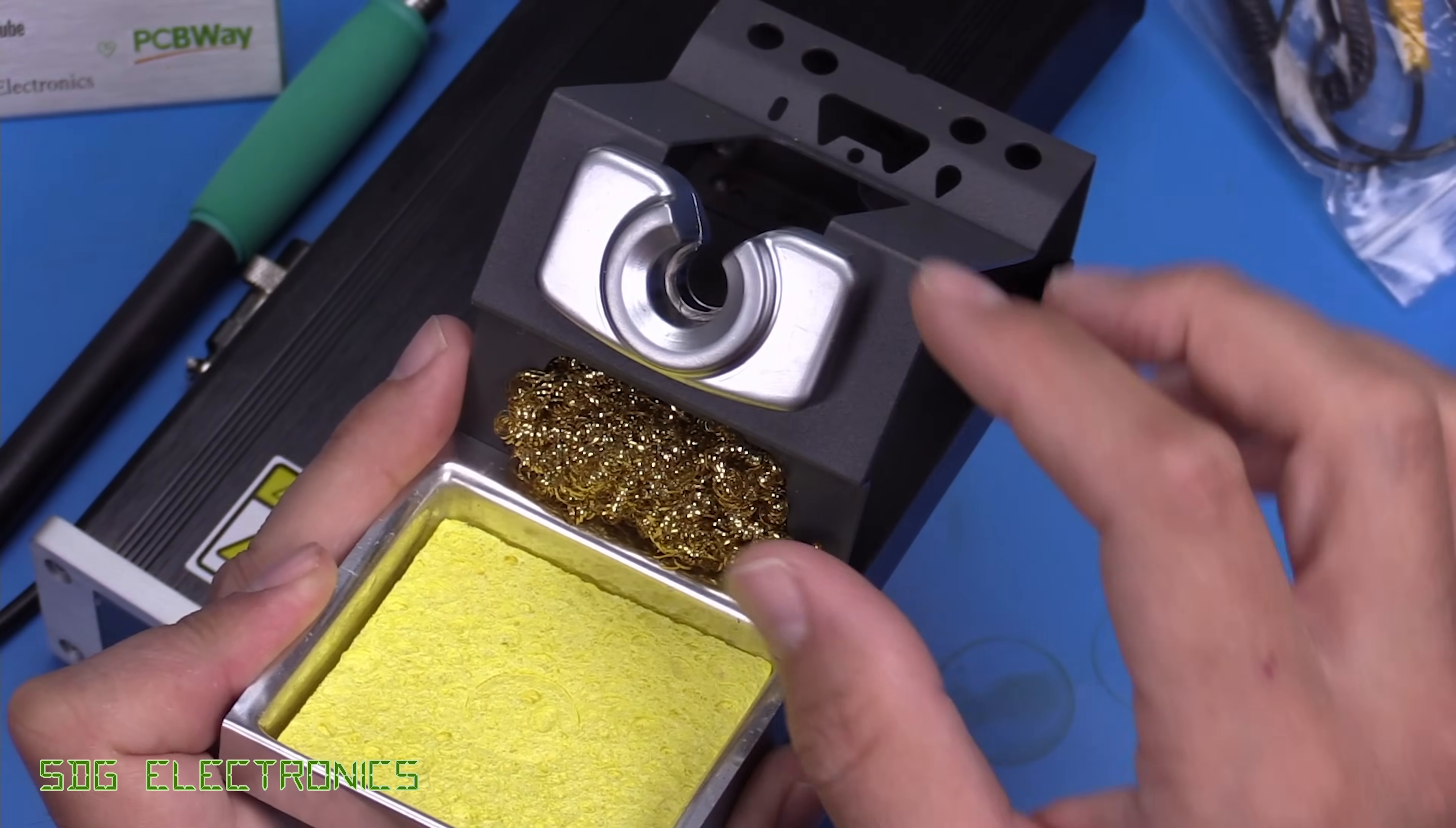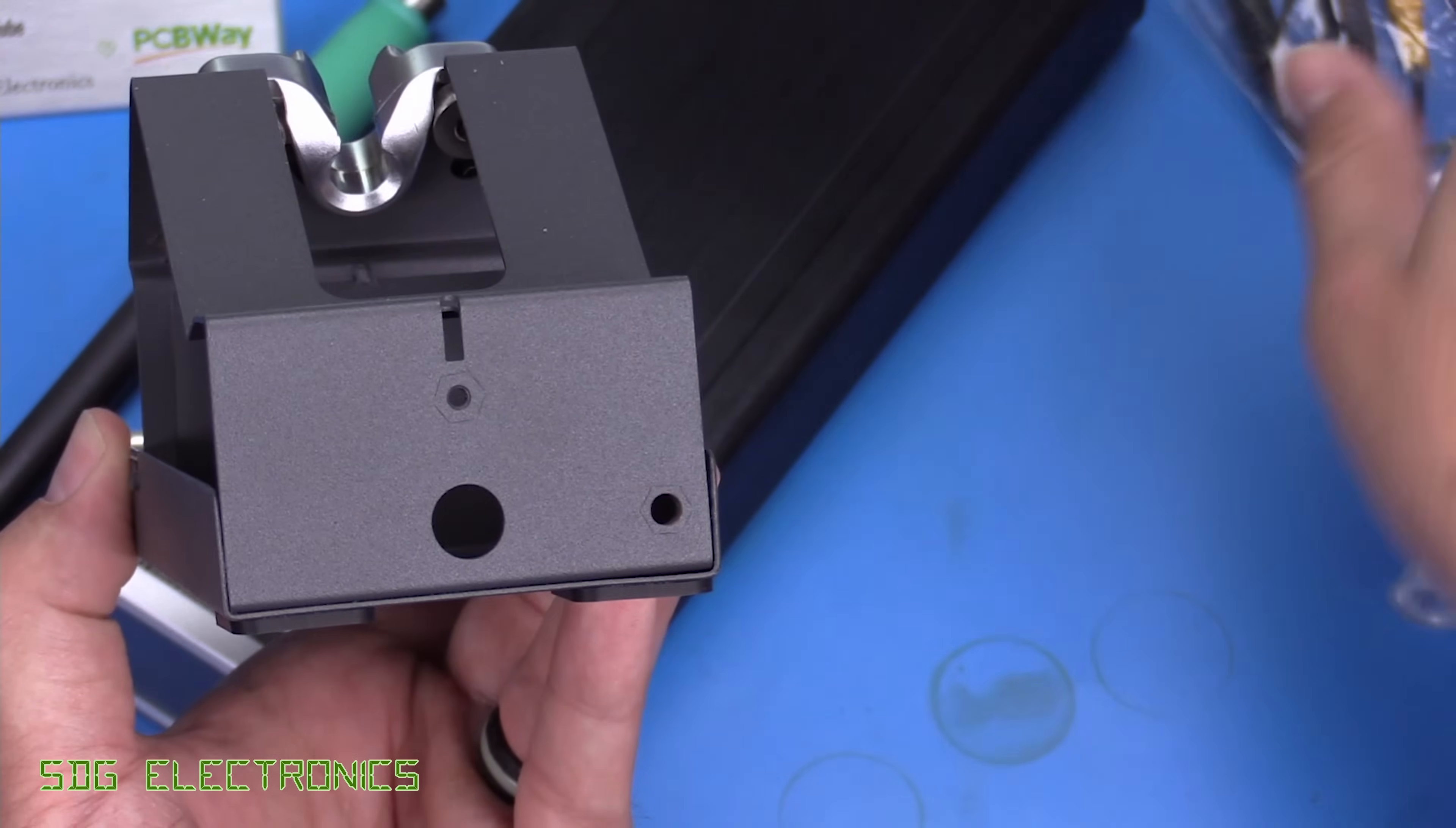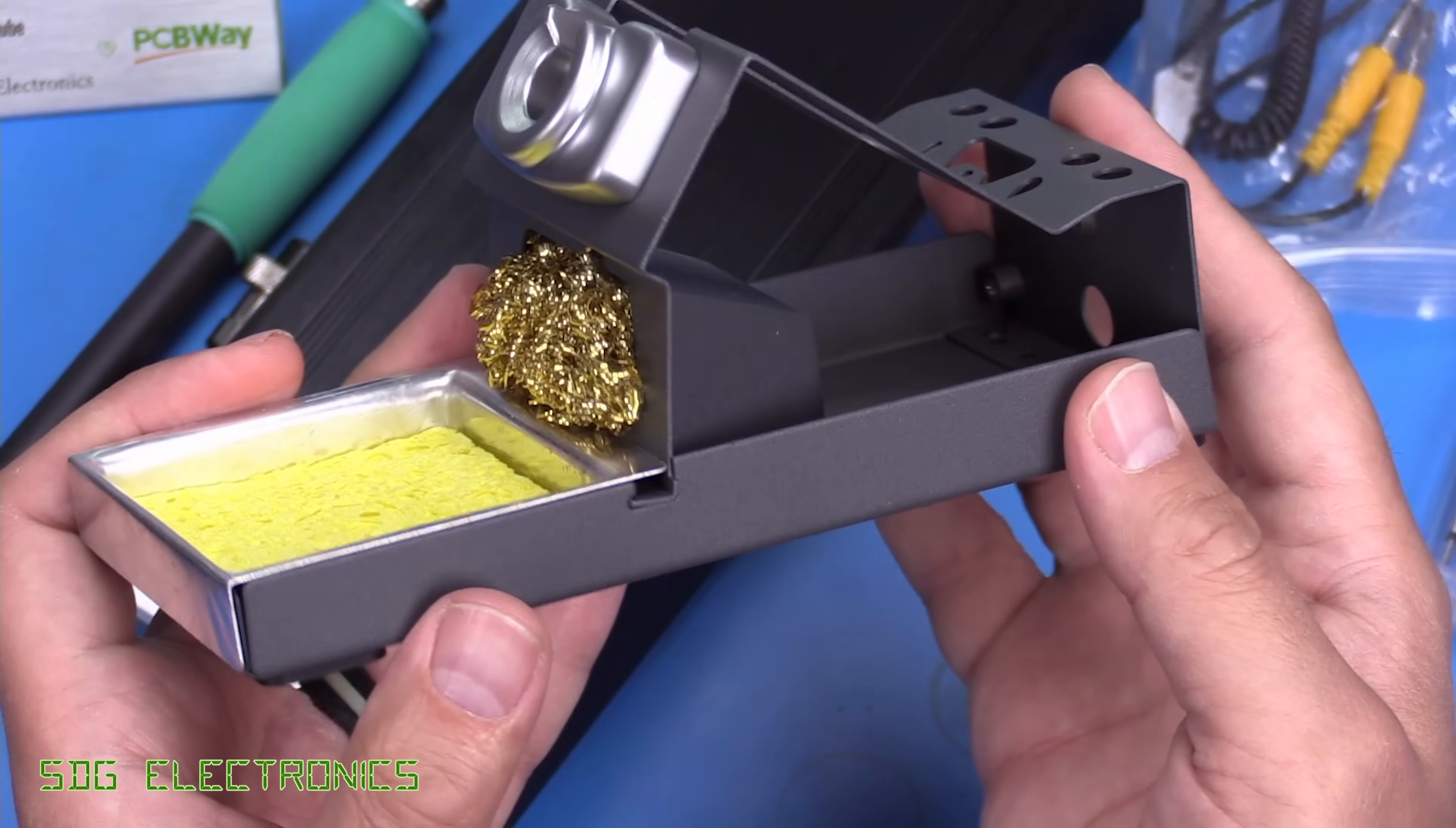Here's the cradle for the unit. And it has the nice holder here for the iron itself. But the rest is quite basic, just folded sheet metal. We've got a connector here which you can push the four millimeter banana jack into. And that's for the auto sleep. But the rest is pretty basic.